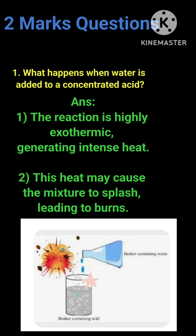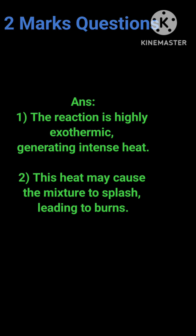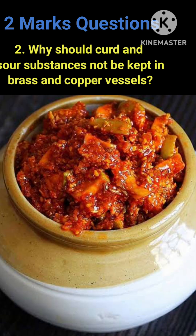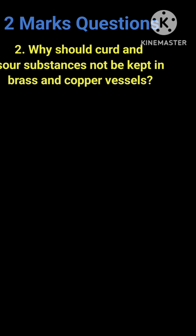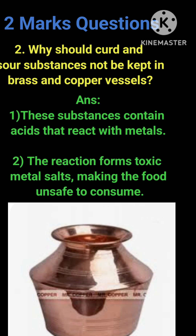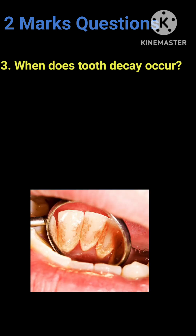Answer: The reaction is highly exothermic, generating intense heat. This heat may cause the mixture to splash, leading to burns. Question 2: Why should curd and sour substances not be kept in brass and copper vessels? Answer: These substances contain acids that react with metals.